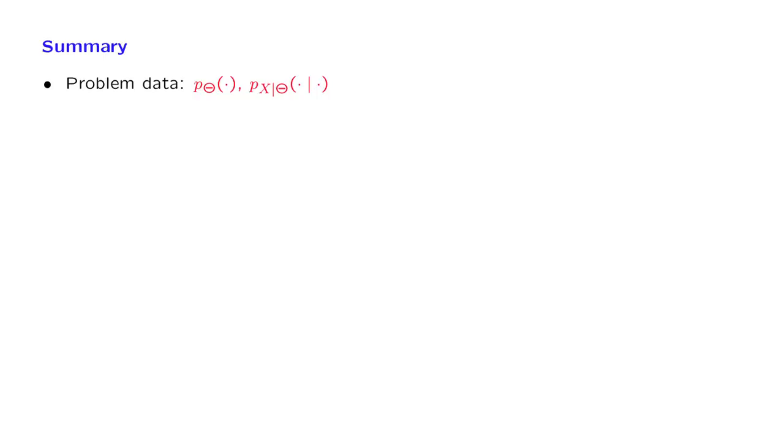The starting point in a Bayesian inference problem is the following. There's an unknown parameter theta, and we're given a prior distribution for that parameter. We're also given a model for the observations X in terms of a distribution that depends on the unknown parameter theta.